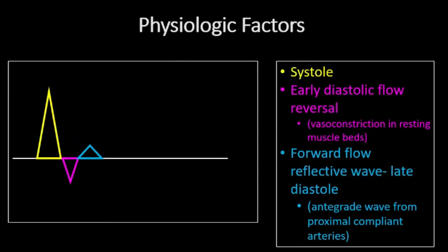A normal triphasic waveform is the result of arterial flow pattern through the cardiac cycle. The early antegrade signal is generated by flow during systole. An early diastolic flow reversal is then detected, followed by a short duration of lower amplitude flow signal — the reflected wave related to vascular compliance — after which flow ceases through the remainder of diastole.